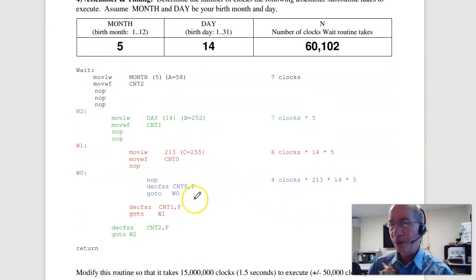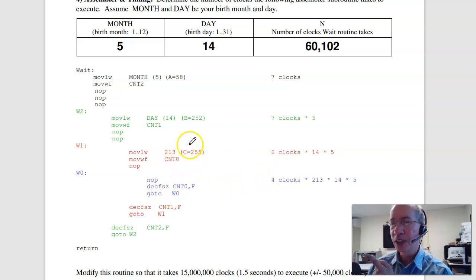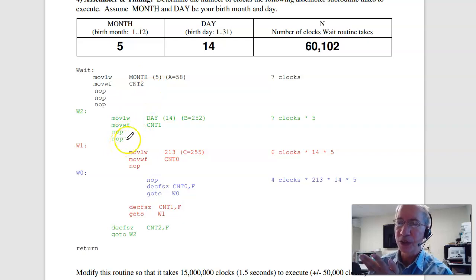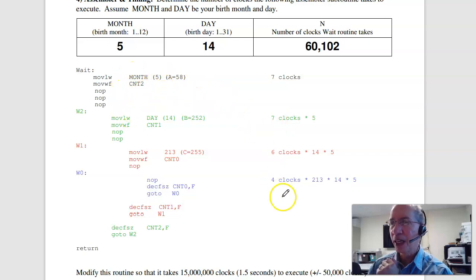Problem 4 is timing. The inner loop has 2 instructions plus 1 for goto — 3 clocks — executed 213 times, times 14 times 5. The red section of code is 5 instructions plus 1 for goto, making 6 clocks, times 14 times 5. The blue section of code contains 6 instructions plus 1 for goto — 7 clocks executed 5 times, plus 7 clocks. Adding them all up, I get 60,102.